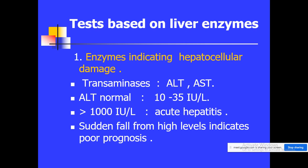Total protein, serum albumin, serum globulins, and prothrombin time — these are the tests based on the synthetic functions of the liver, which are included in the liver function test.